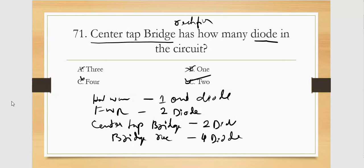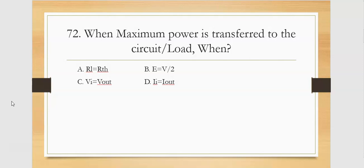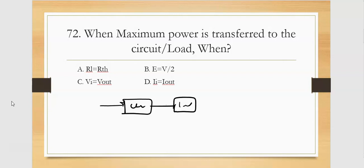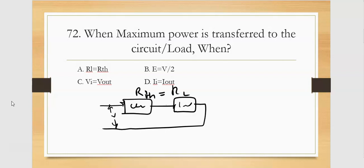When maximum power is transferred to the circuit, the Thevenin resistance should be equal to the load resistance. That is the condition for maximum power transfer theorem. So the first option is the right one — the Thevenin resistance should be equal to the load resistance.